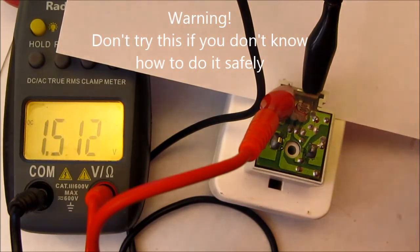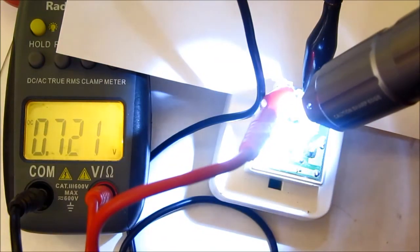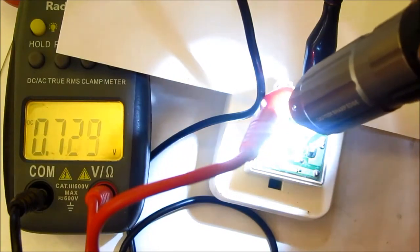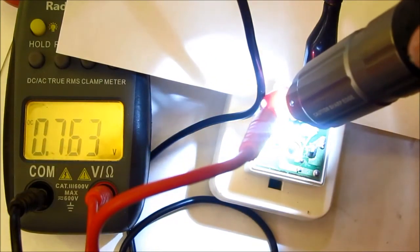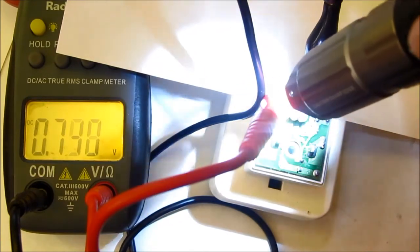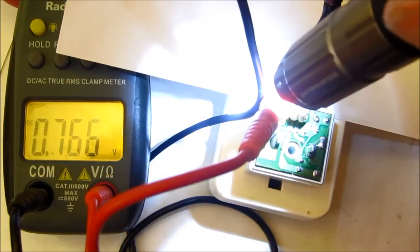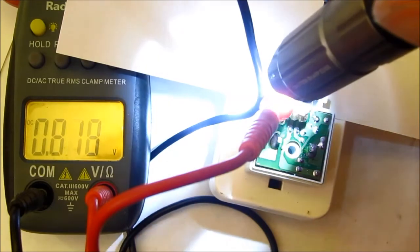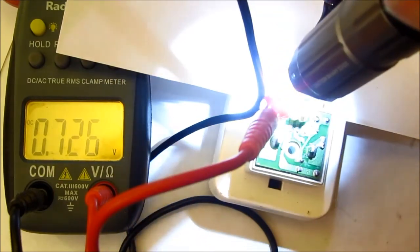If I take my flashlight, light up the light-dependent resistor, voltage across the LED drops further as Q1 turns on more. It's down to 0.75, 0.8, it's jumping around a bit.